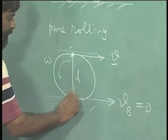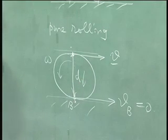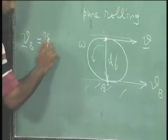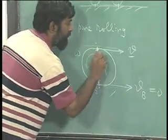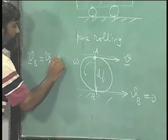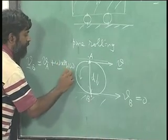If I take the direction, this is the direction. Can I write VB in terms of VA? The answer is yes. VB is equal to VA plus omega cross RB with respect to A.